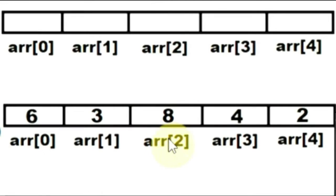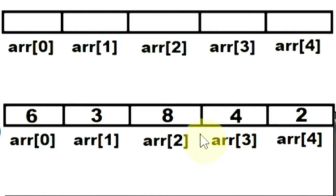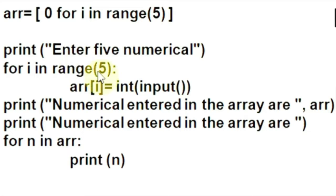The next value entered by user is suppose, say 8. It will be assigned to arr[2] index location. Thereafter, the value of i will increment to 3. Next value, suppose user enters is 4. That will be assigned to your arr[3] index location.